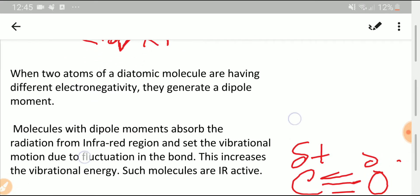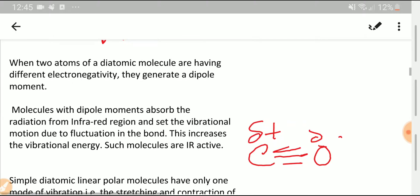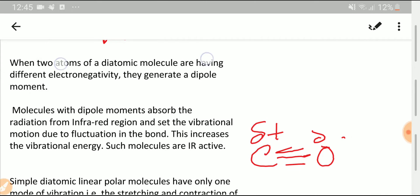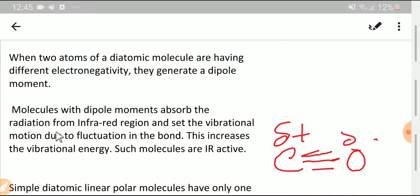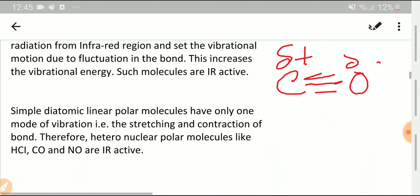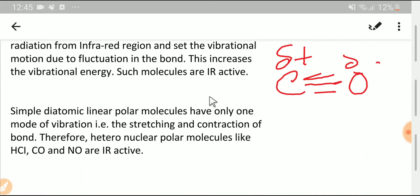When two atoms of a diatomic molecule have different electronegativity, they generate a dipole moment. Molecules with dipole moment absorb radiation from the infrared region and set the vibrational motion due to fluctuation in the bond. This increases the vibrational energy. Such molecules are IR active or greenhouse gas.